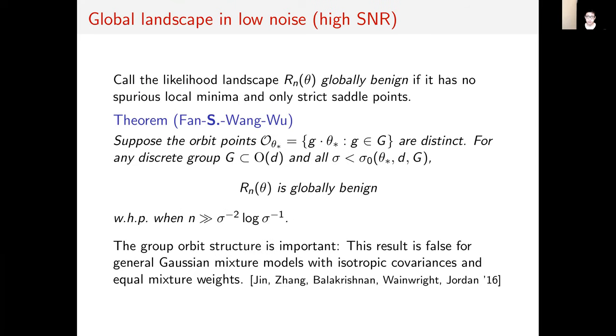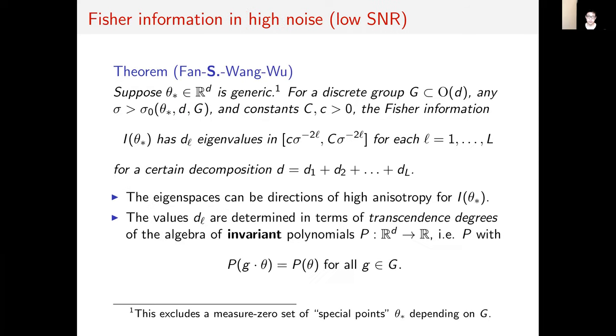For the global landscape, we call the likelihood landscape R_n(θ) globally benign if it has no spurious local minima and only strict saddle points. In the low noise regime, we show that the likelihood landscape is globally benign for any discrete group G ⊂ O(d) as long as n ≫ σ^(-2) log σ^(-1). The group orbit structure is important: This result is false for general Gaussian mixture models with isotropic covariances and equal mixture weights.